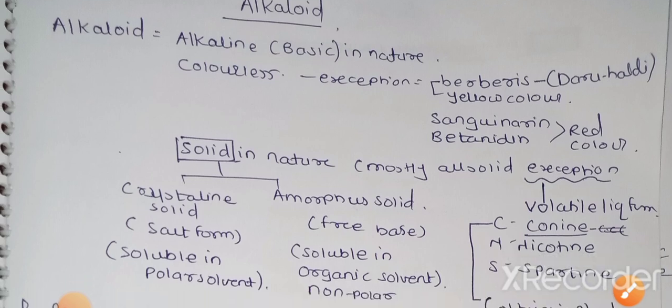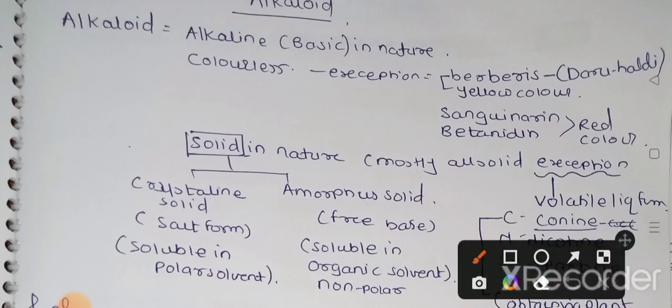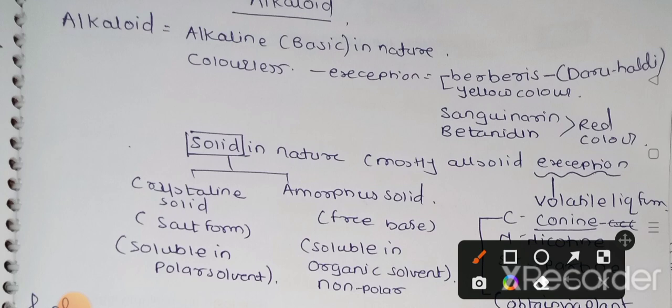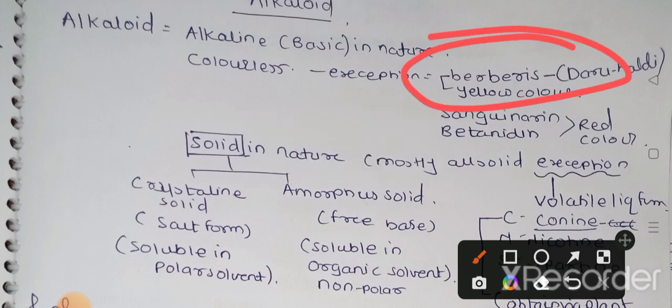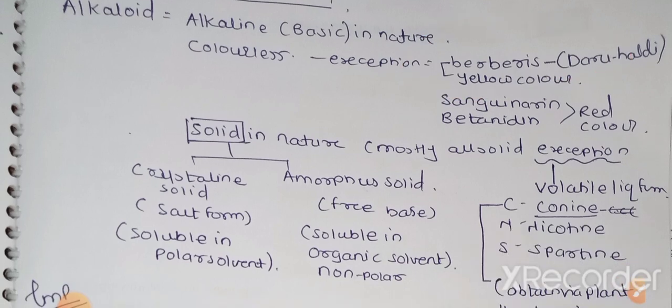After that, alkaloids are colorless. This is basic information regarding alkaloids - almost all these drugs are colorless, but there are some exceptions you have to remember from GPAT point of view. The exception is the drug berberis, also called daru haldi, which is yellow color. After that, the next drugs sanguinarin and betanidin have red color.